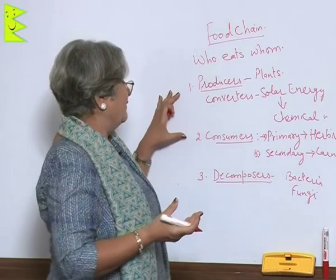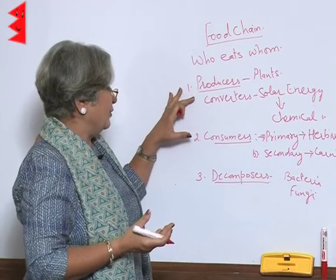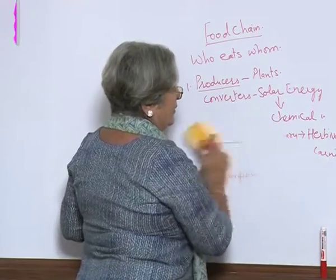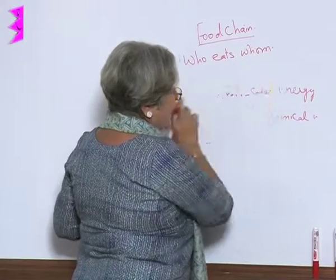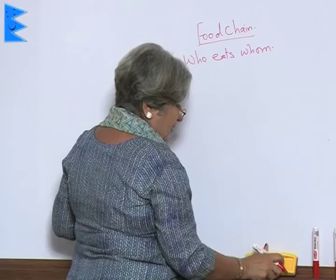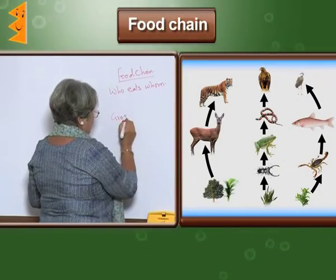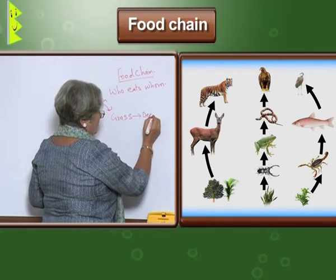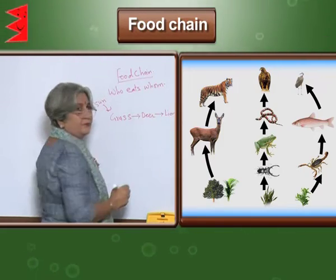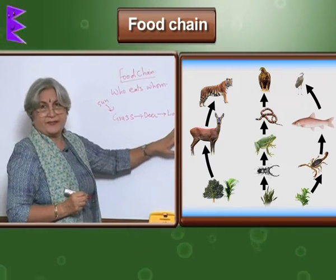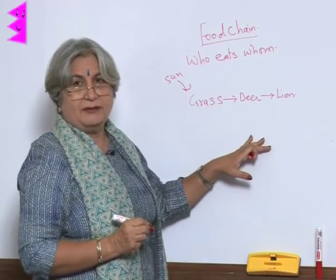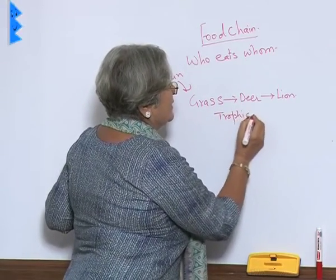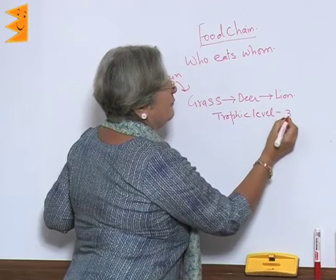So a food chain will necessarily have three parts: producers, consumers, and decomposers. A simplest food chain could start from sunlight — grass gets sun, then deer eats the grass, then lion eats the deer. There are just three levels, and the level at which a type of organism exists is called a trophic level. In this food chain there are only three trophic levels.